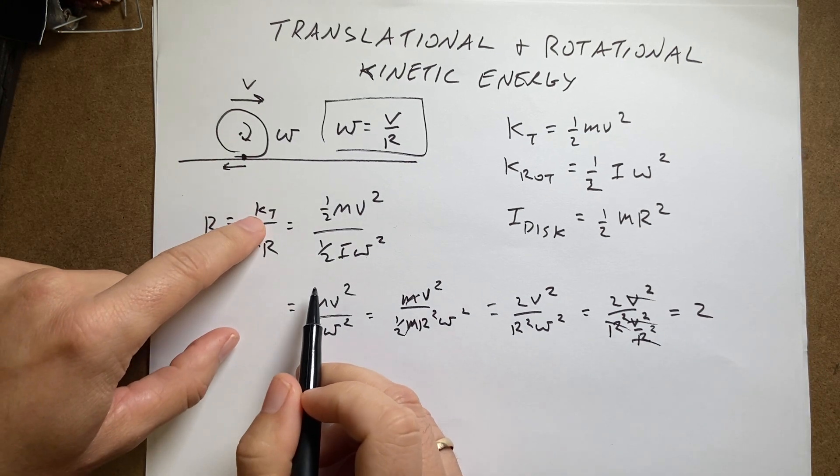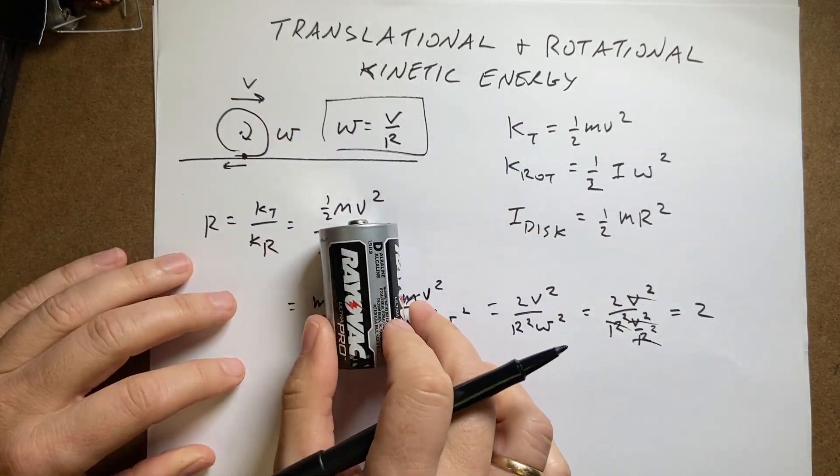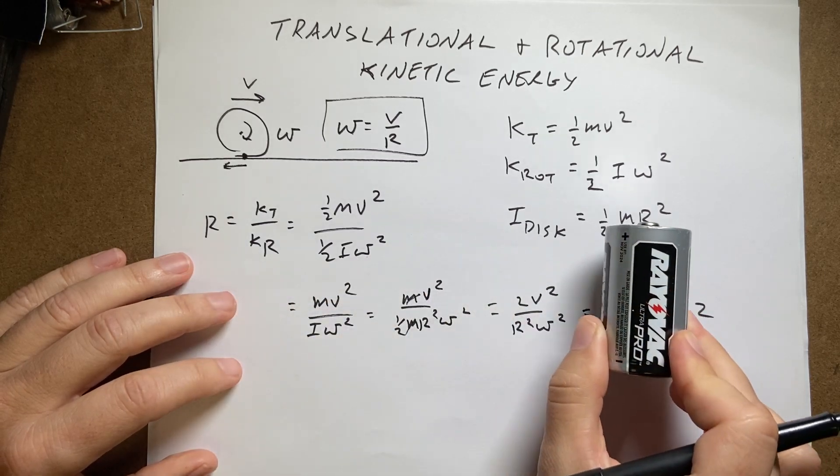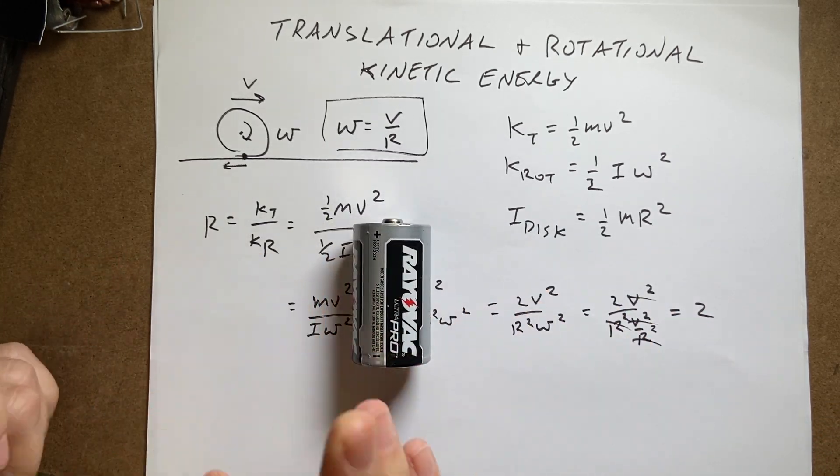So this means that there is twice, for this cylinder, there is twice the translational kinetic energy as rotational kinetic energy if it's rolling without slipping.